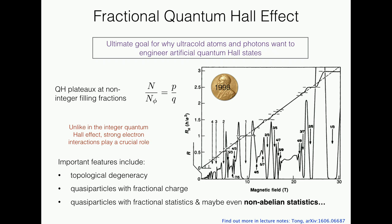Strong correlations allow several different things to happen. One of the things people are very excited about is the possibility that some fractional quantum Hall states — not all, just some — may have quasiparticle excitations which can have non-abelian anyonic statistics.